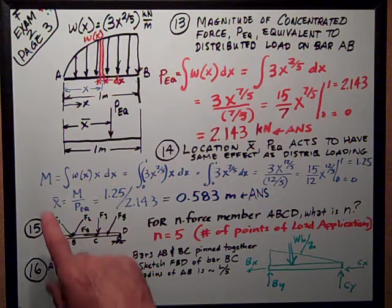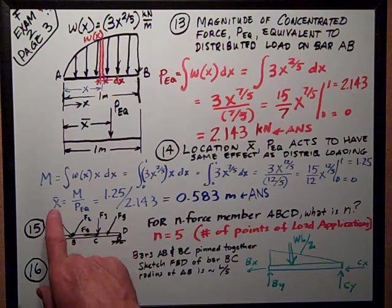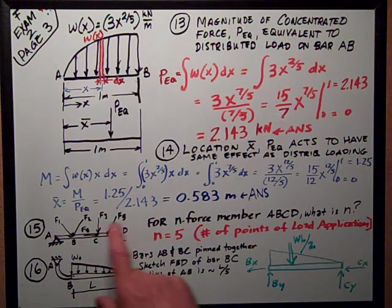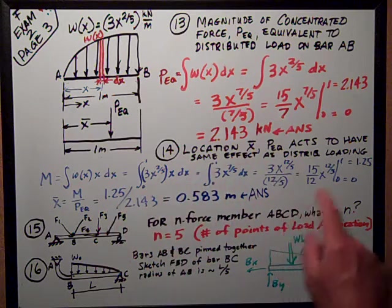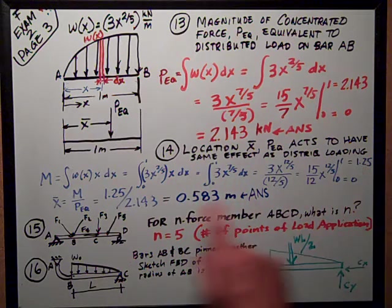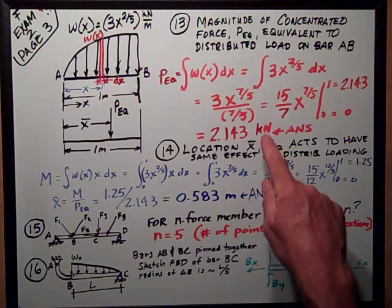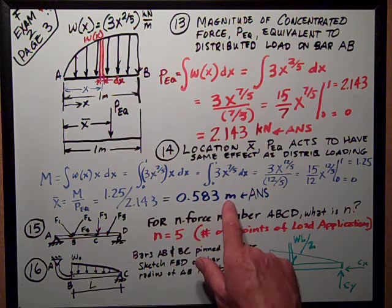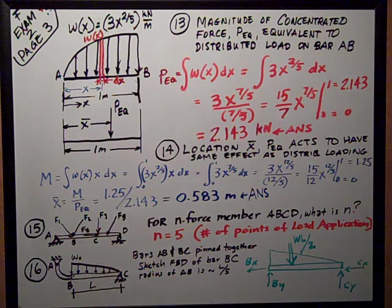So, remember that m, the moment, is equal to the force times the distance, so I just rearrange that equation into this format. X bar is equal to the moment divided by the equivalent force. Moment is 1.25 kilonewton meters, divided by 2.143 kilonewtons from part 13, is equal to 0.583 meters. That's the answer. That's the x bar distance that PEQ acts at.